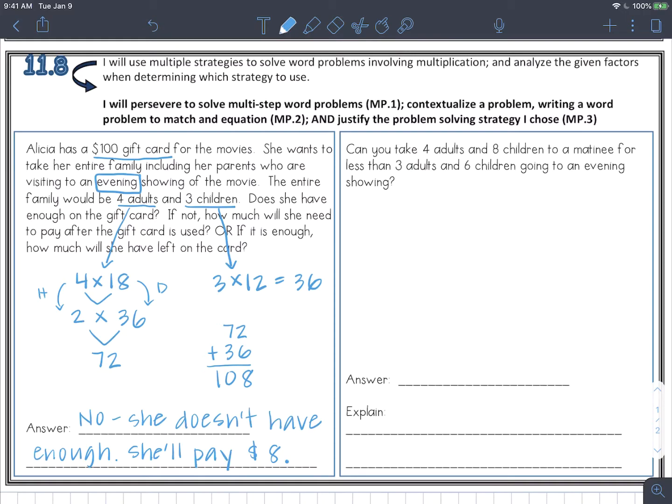Continuing with the same information, another part of the word problem says, can you take four adults and eight children to a matinee for less than three adults and six children going to an evening showing? So again, calculate these separately, and then you can compare. So for the three adults and six children going to the evening showing, it would be three times 18 for the adults and six times 12 for the kids. You can always write out your equations and then go back and solve all of them.